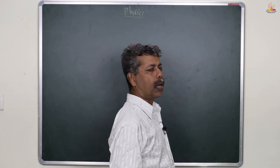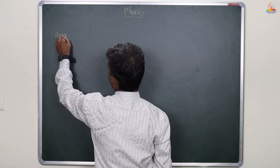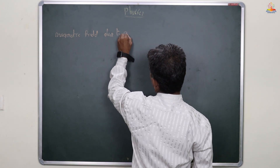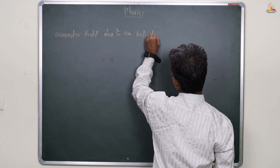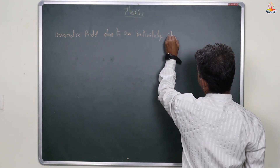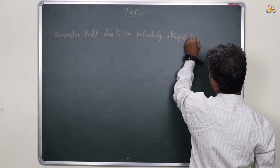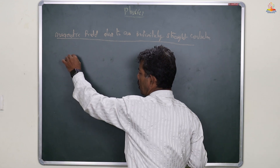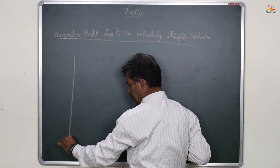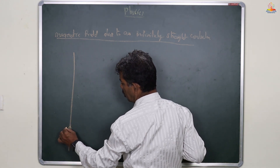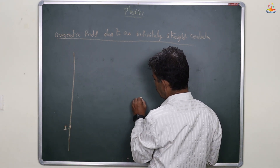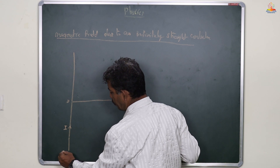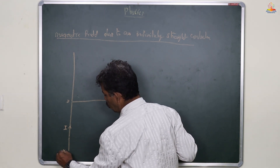Next, one of the applications of the Biot-Savart Law: the magnetic field due to an infinitely straight conductor. We are taking an infinite conductor with current I passed through it. P is a point, and O is the midpoint. The infinite conductor is labeled XY.